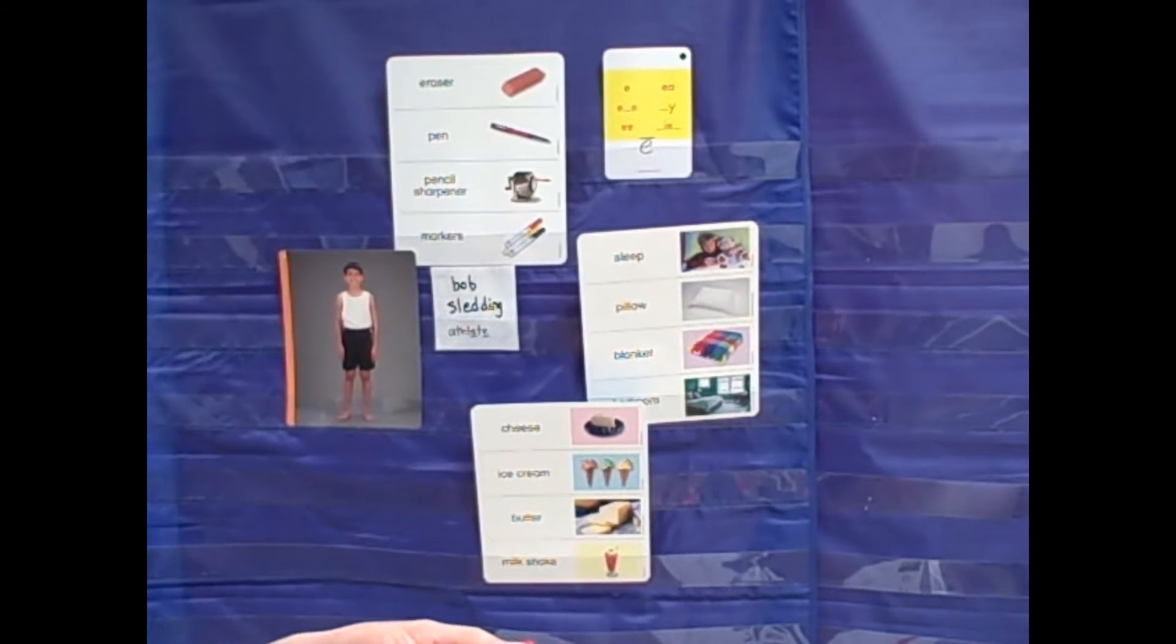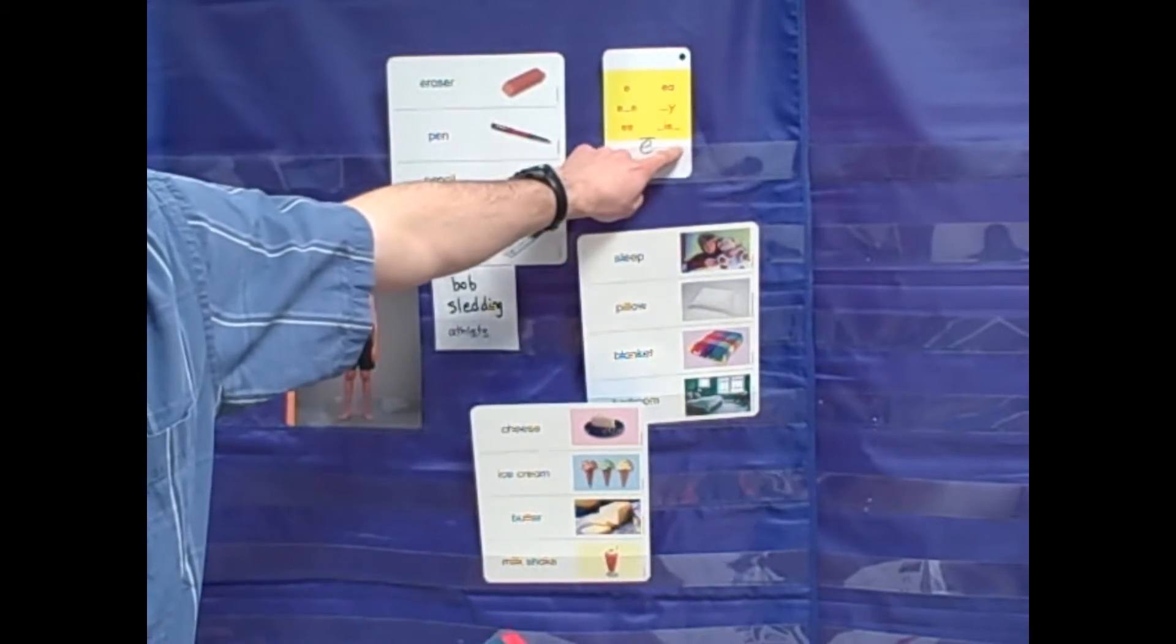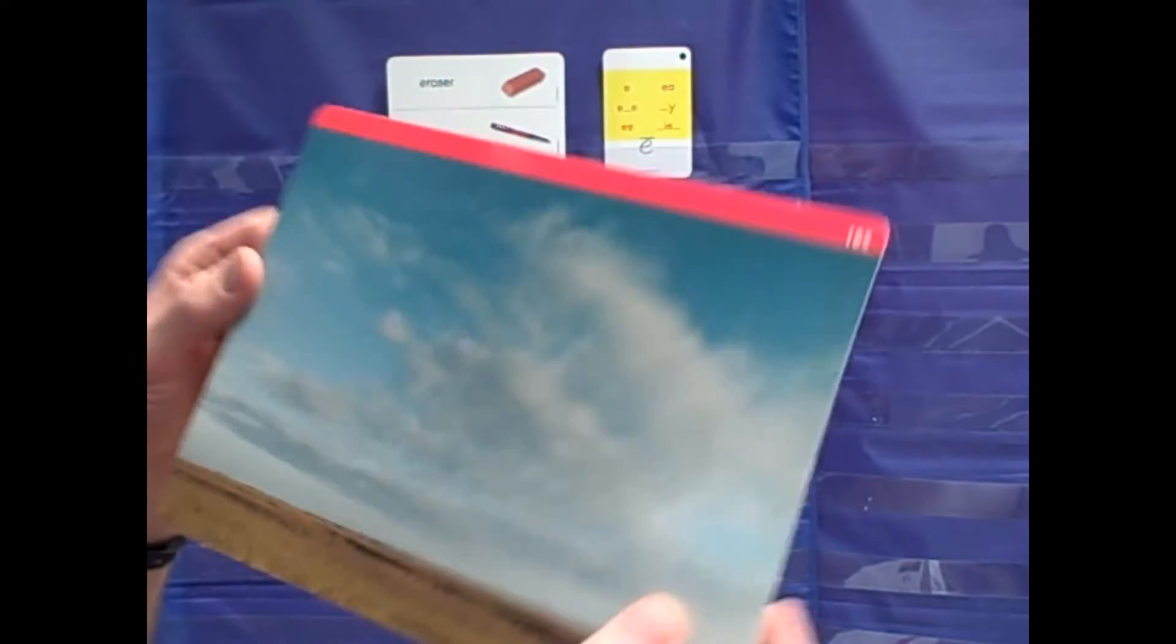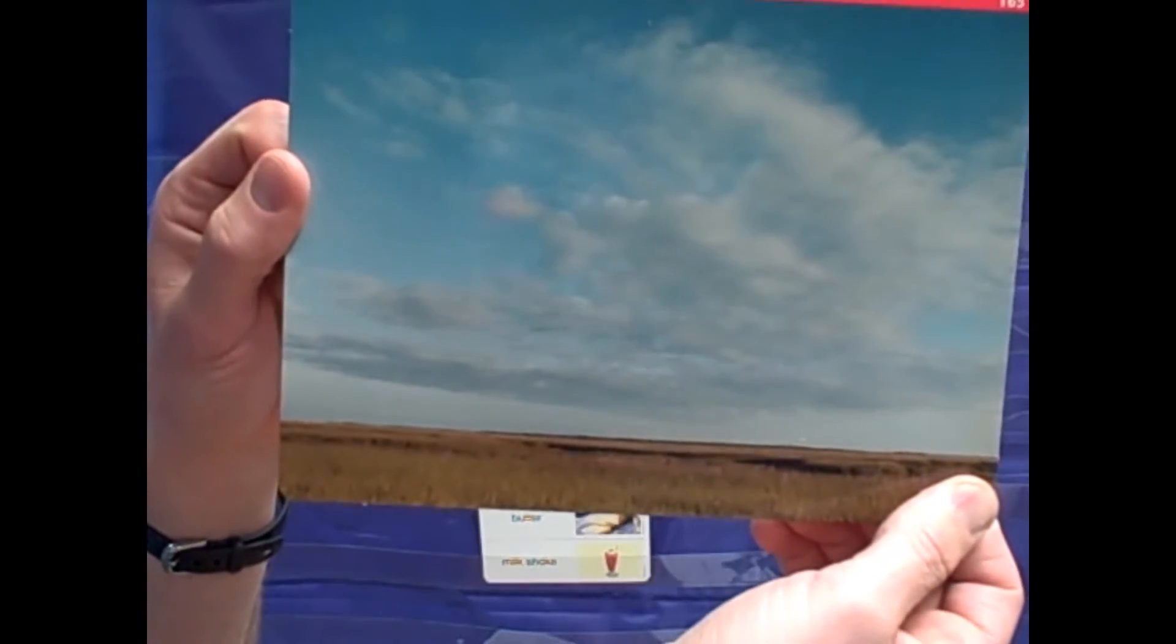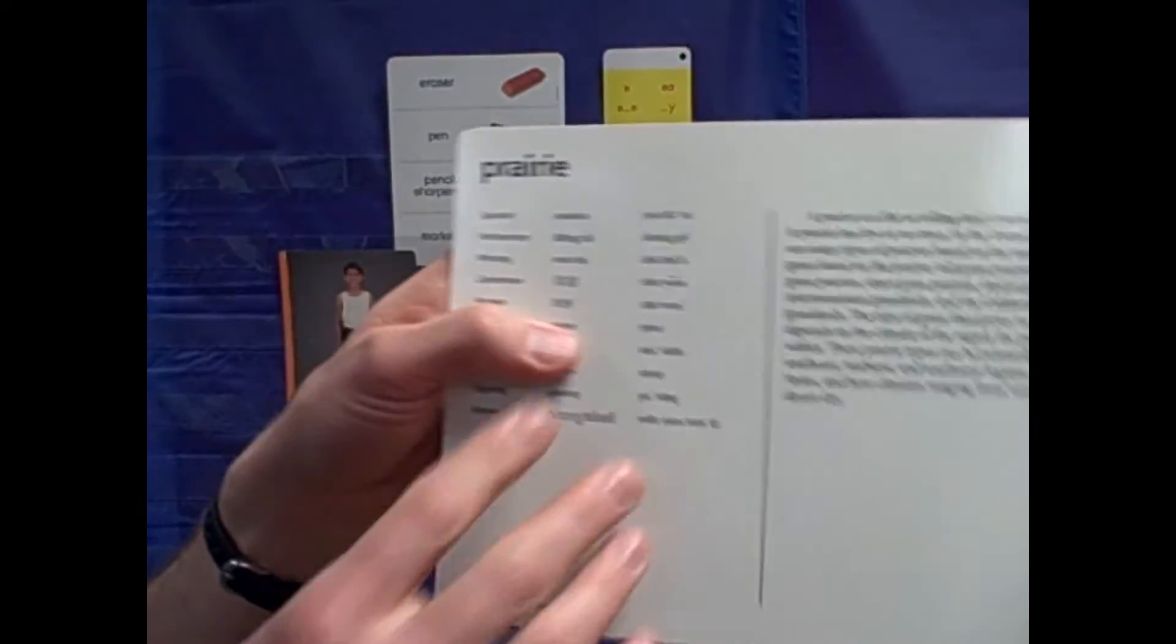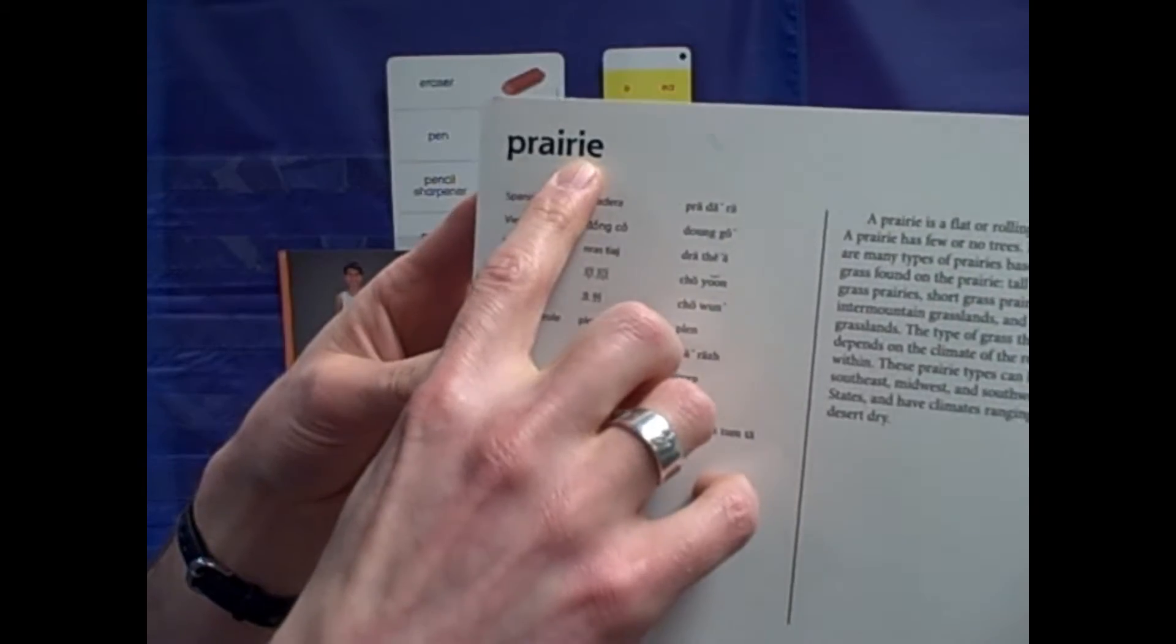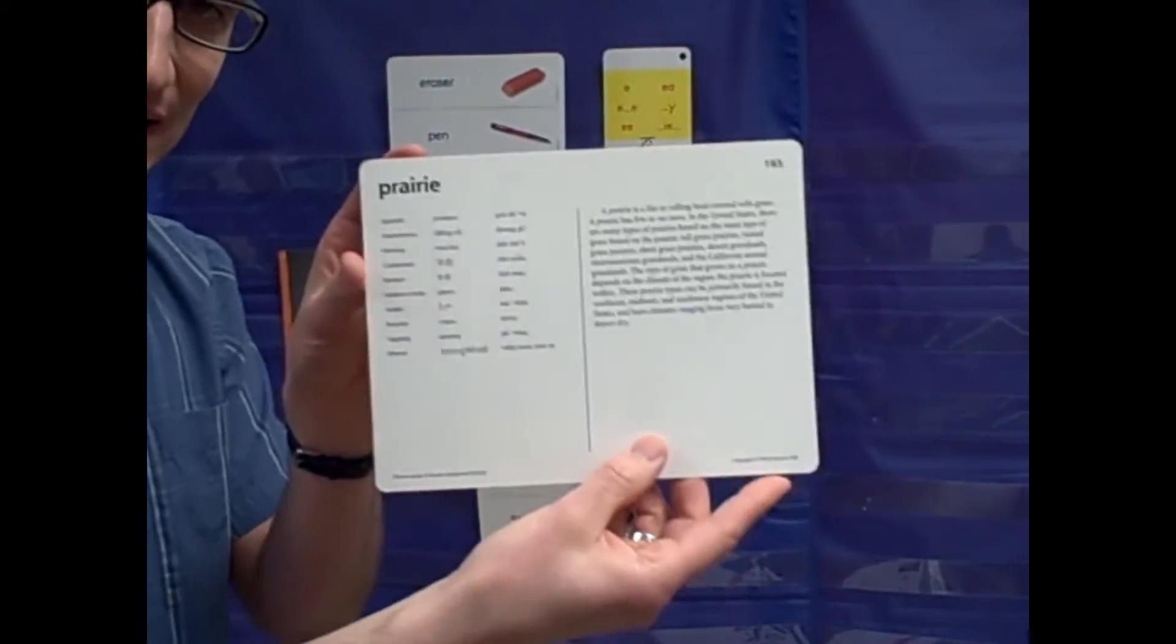The last spelling for E that I will show you is the spelling for IE. This is a picture of a prairie. It has IE at the end. IE says E.